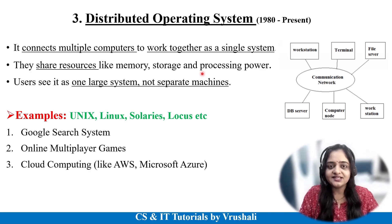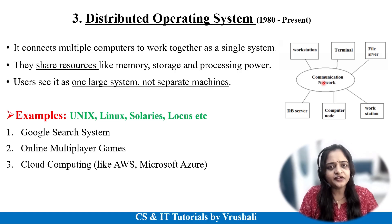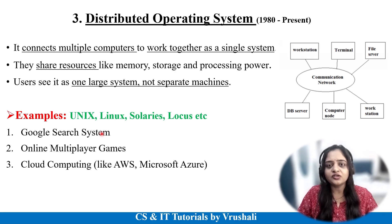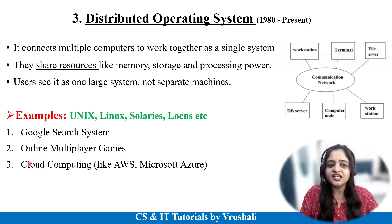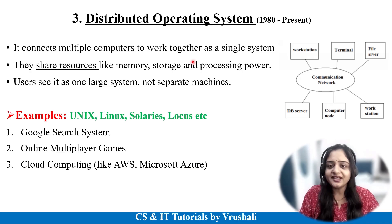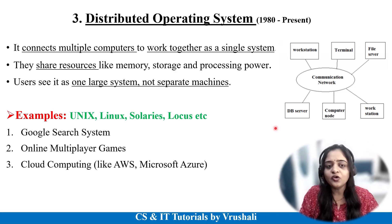The next type is distributed operating system. Distributed means multiple computers are connected to one single system. A great example is the Google search system — when you search something on Google you get the result instantly, and similarly multiple users can search on Google at the same time. Google has multiple servers and multiple nodes that serve each and every user equally and instantly. This concept is also used in online multiplayer games and cloud computing systems like AWS and Microsoft Azure. In a distributed OS, all resources like memory, storage, and processing power are shared equally across all nodes.